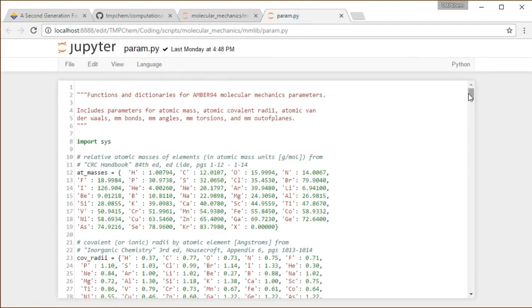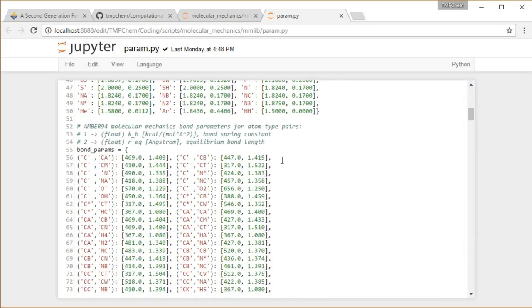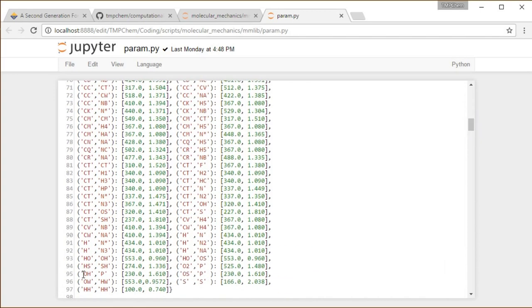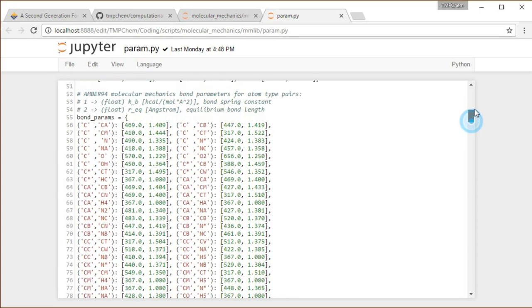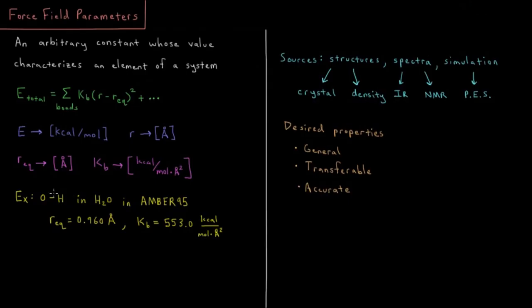This includes some Python dictionaries with all that. So if we go to bond parameters and find, for example, HW-OW, which one comes first, OW-HW, you see 553.0, 0.9572, and those are the two parameters that I just mentioned for our AMBER95 water OH bond.